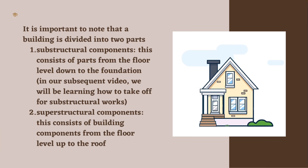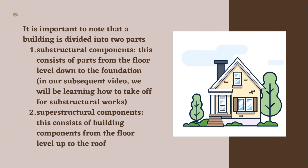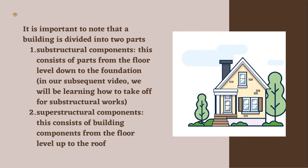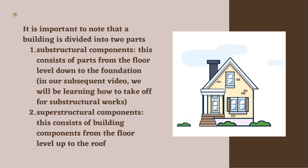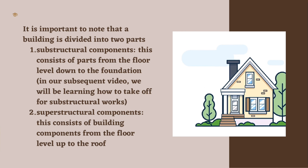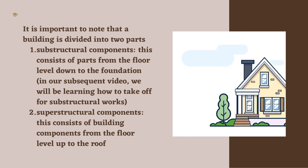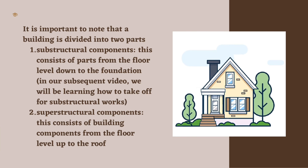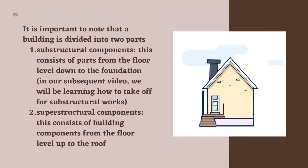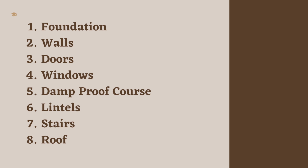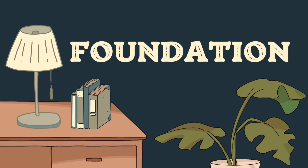It is important to note that a building is divided into two parts. One: substructural components — this consists of parts from the floor level down to the foundation. In our subsequent video we will be learning how to take off for substructural works and quantities. Two: superstructural components — this consists of building components from the floor level up to the roof.